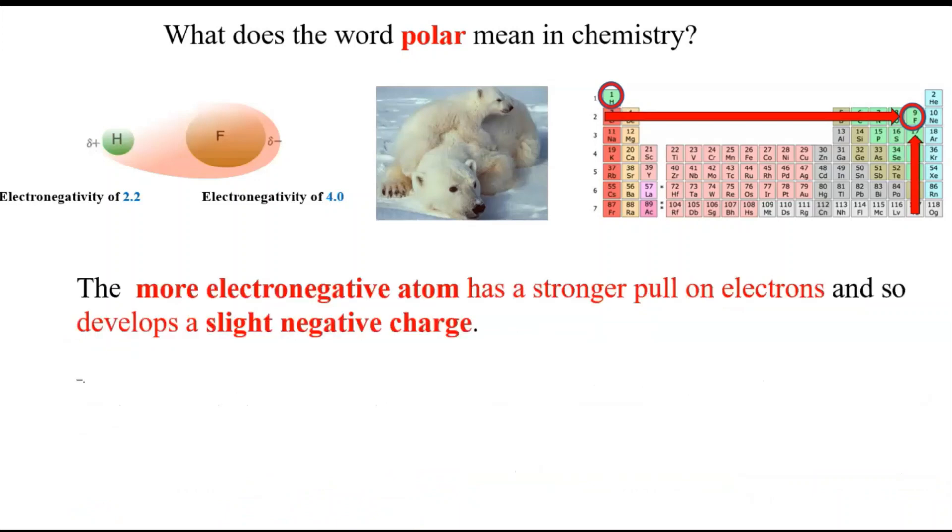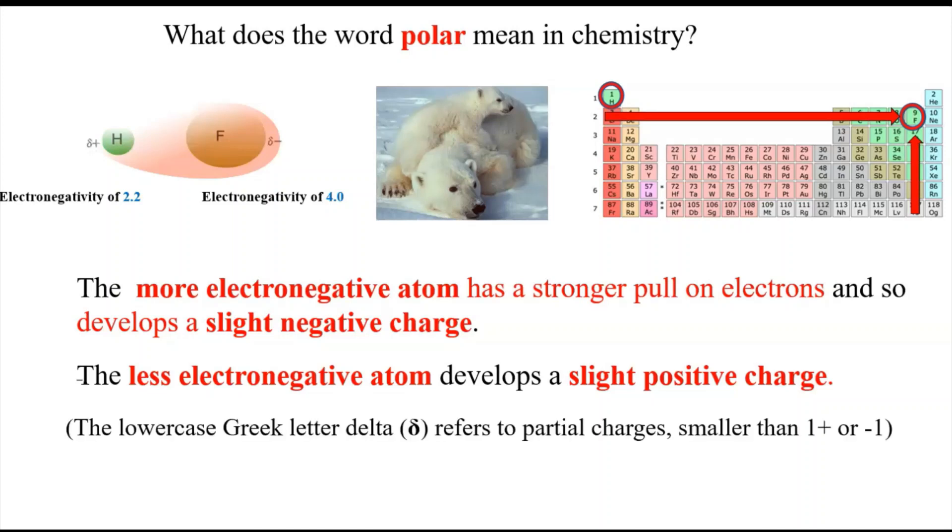So the more electronegative atom, since it has a stronger pull on these electrons, develops a slight negative charge and the less electronegative atom develops a slight positive charge. You may notice here this lowercase Greek letter delta, and there's a little negative sign here, lowercase Greek letter delta, a little positive sign. That refers to what's called partial charges.